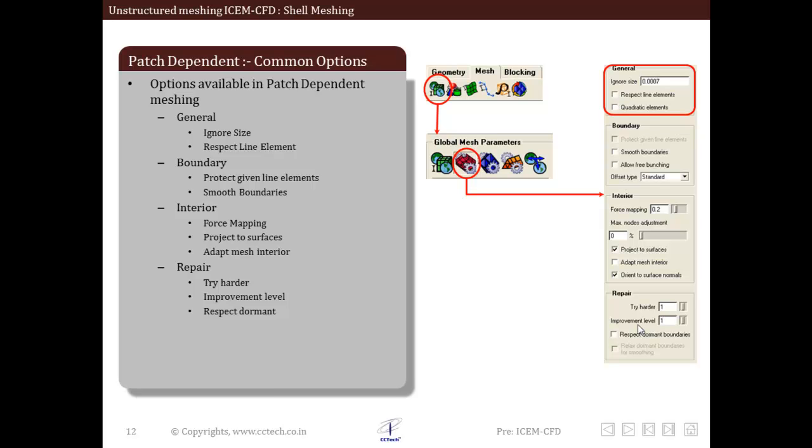In this we have ignore size and respect line element option, that is the tick options which we will discuss later what these mean. Then we have the boundary options in which we have protect line elements and smooth boundaries option. Also allow free bunching option is there. We will also discuss these in detail in the coming slides.